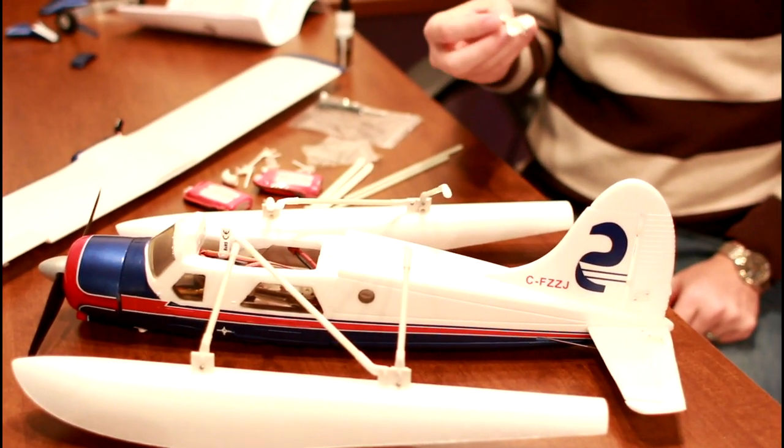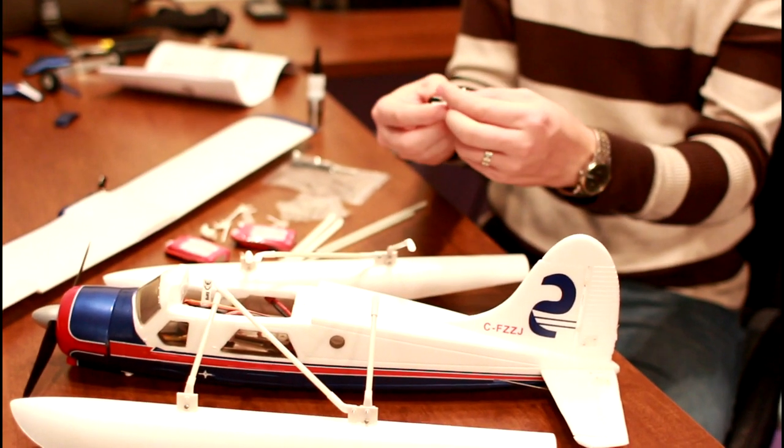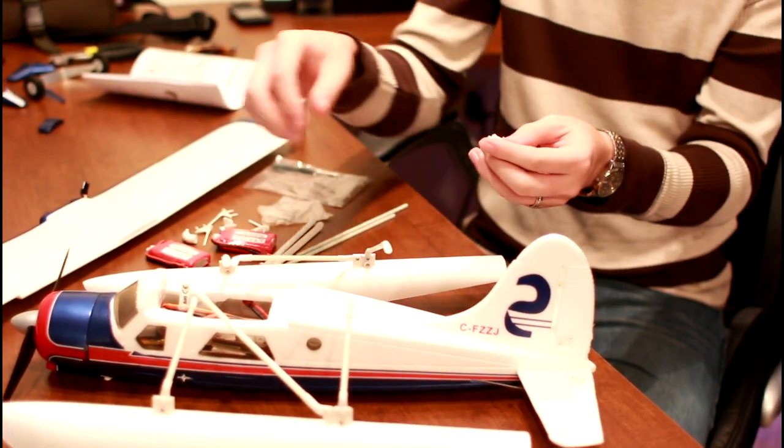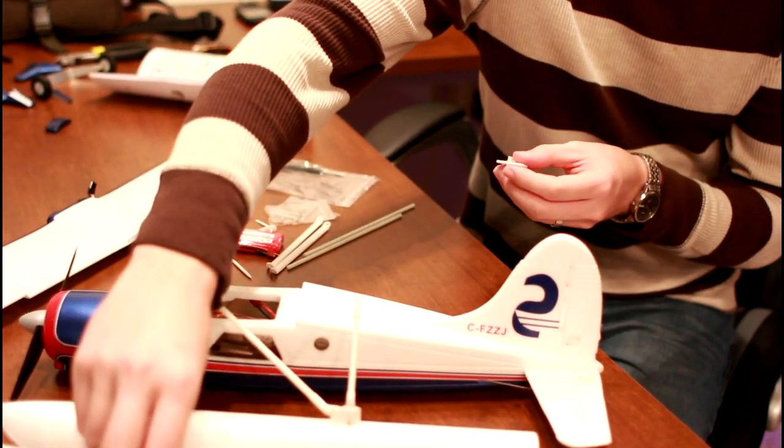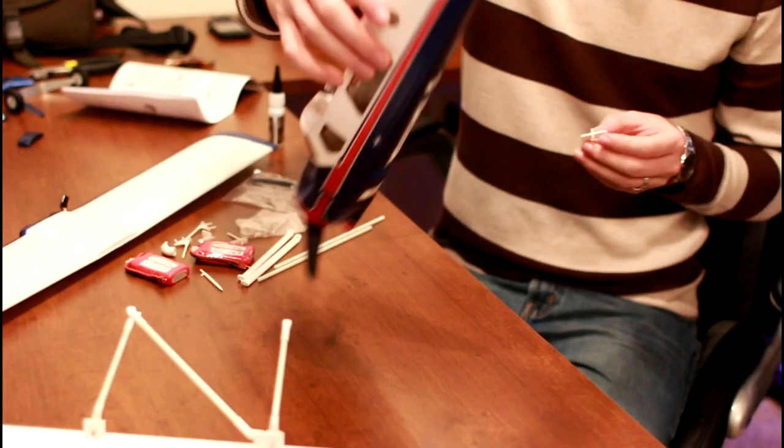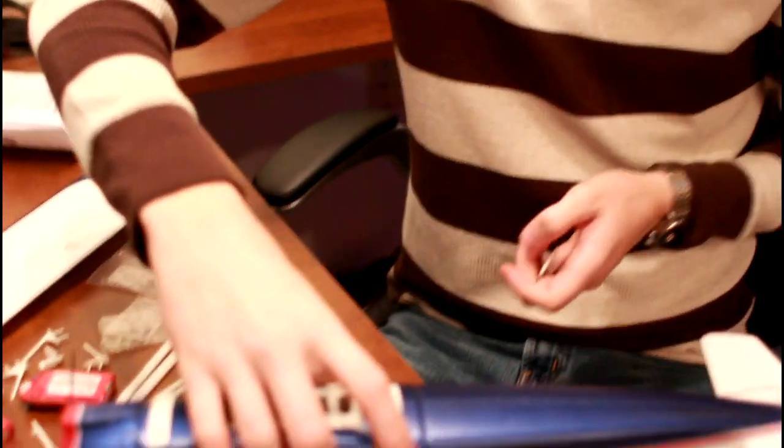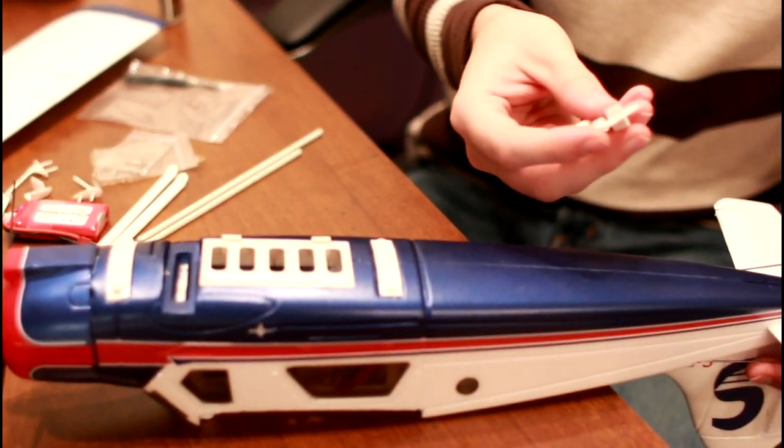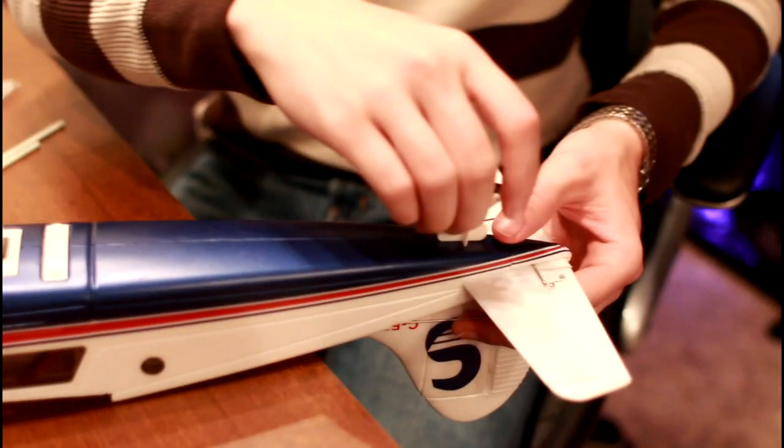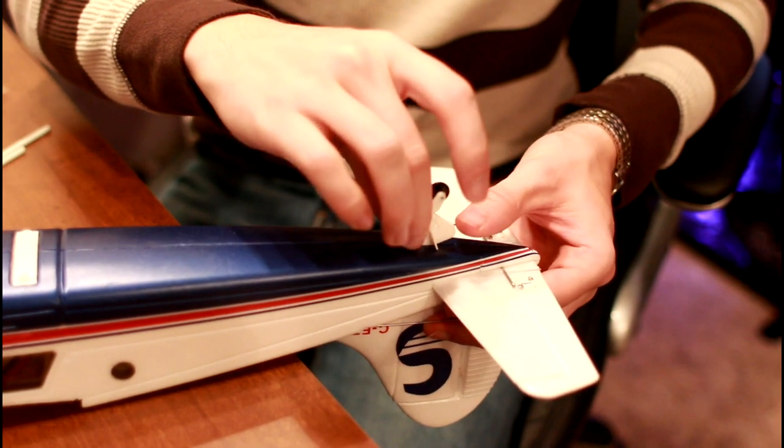We are going to go ahead and attach the tail gear to the bottom of the plane because it's used whether you have the wheels on or not. So we want to flip this over, maybe hang the tail over the edge of the table. There's a cross that matches up with the plastic. It'll just slide right in.